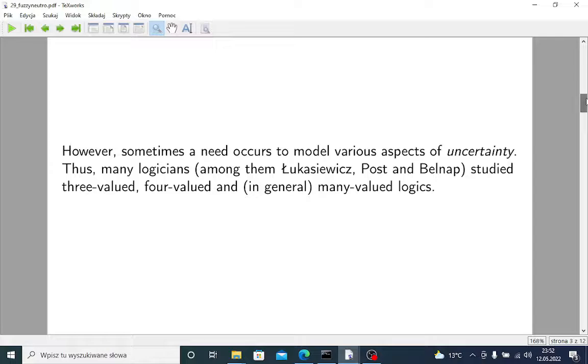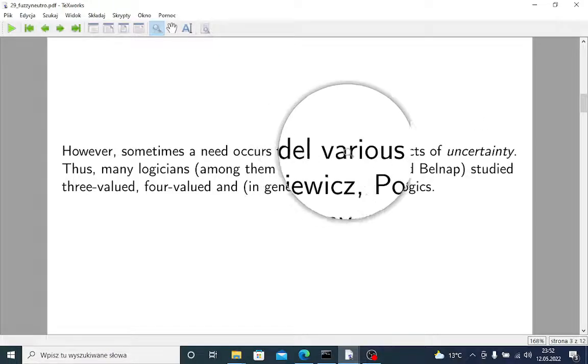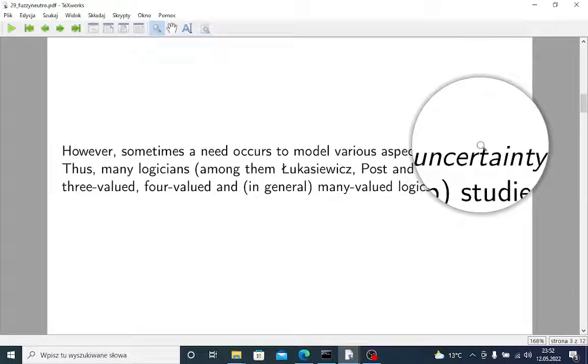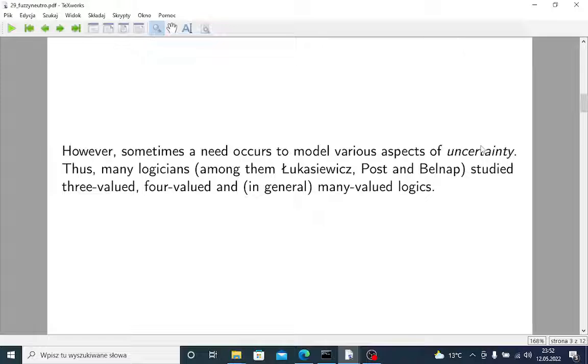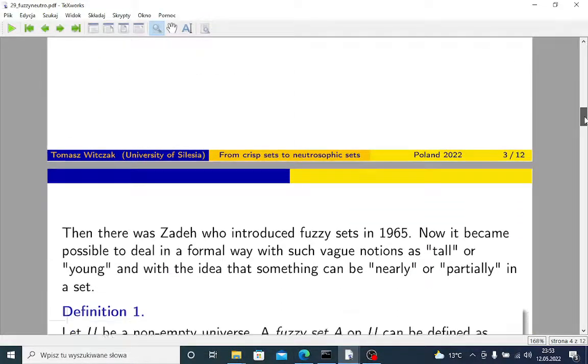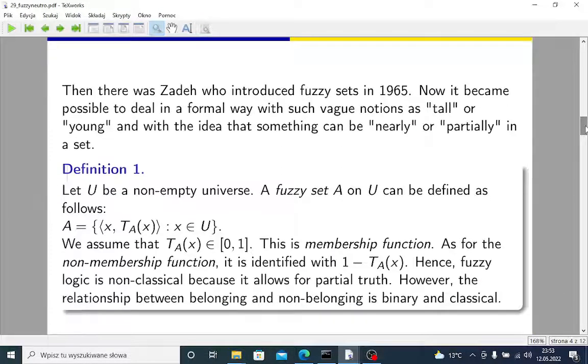But sometimes a need occurs to model various aspects of uncertainty, in a sense different than in probability theory. Many logicians, starting from Lukashevich, then there was Post and Belknap, they studied 3-valued, 4-valued and in general many-valued logics or multiple-valued logics. This is still popular, but there was Zadek.